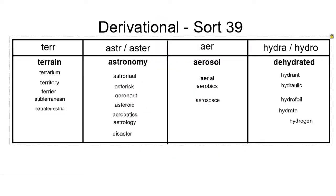How did you do? Some of the words might still be tricky. For example, disaster. For the meaning of disaster, you actually have to look at the word astrology first. Astrology is the study of the stars. Throughout history, there have been groups of people who believe that you can study the stars to find the future.